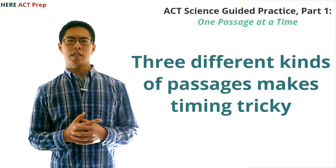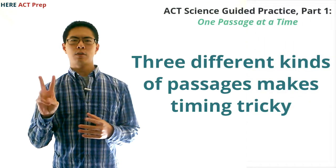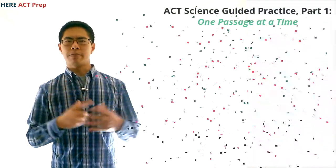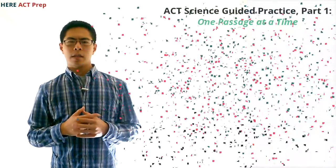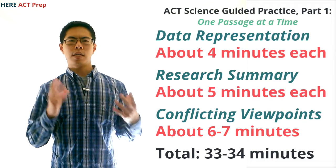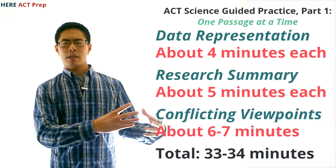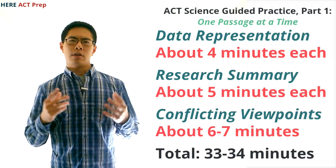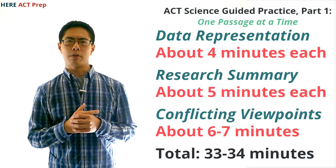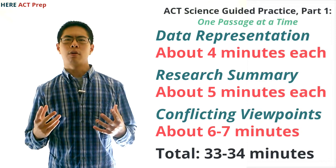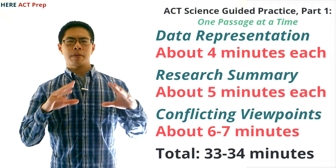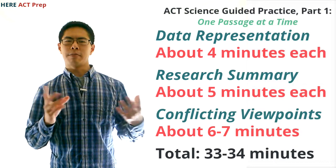Since the ACT science test contains three different kinds of passages with different numbers of questions, we shouldn't spend the same amount of time on each type of passage. Generally speaking, we want to spend about four minutes on each of the three data representation passages, five minutes on each of the three research summary passages, and about six to seven minutes on the conflicting viewpoints passage. This adds up to about 33 to 34 minutes, which gives us some buffer time to check over answers we might not have been sure about.